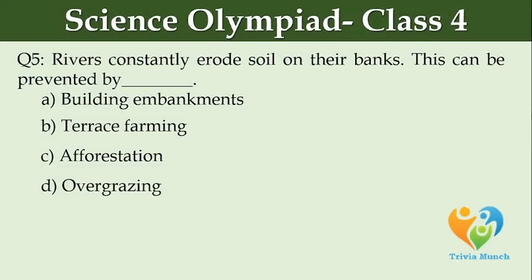Rivers constantly erode soil on their banks. This can be prevented by dash. Option A: Building embankments. Option B: Terrace farming. Option C: Afforestation. Option D: Overgrazing.